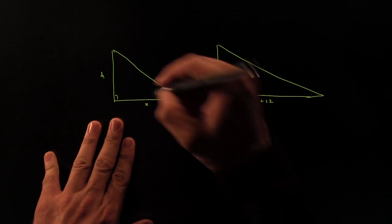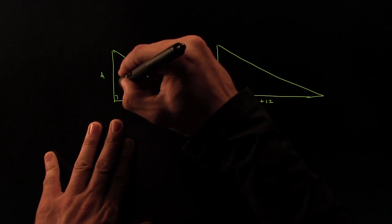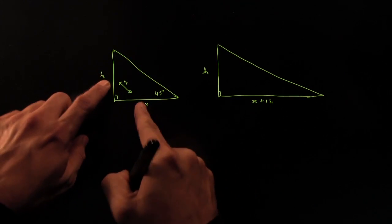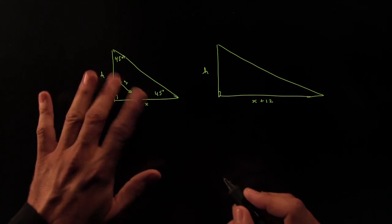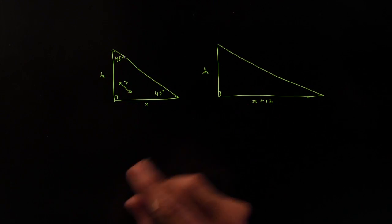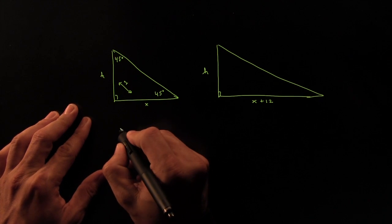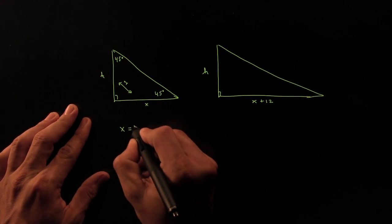Now the thing about the 45-45 triangles is that we know these ratios. These ratios are one to one. The two sides are isosceles. The two sides are the same, because we have an isosceles triangle. Equal angles make equal sides. So these two have to be equal. That tells us that X and H are equal.